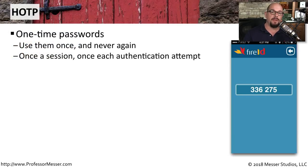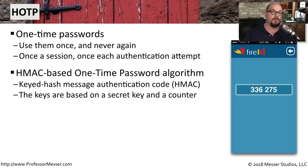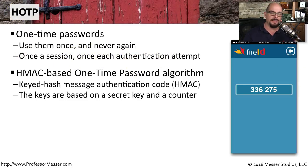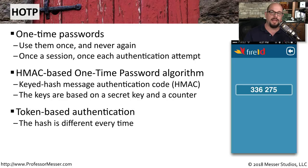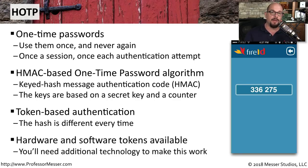Some token generators use a predefined list of tokens — these are one-time passwords that you use once and never use again. You use one password per session, and next time you authenticate, you use the next token in the list. We refer to these one-time use tokens as HOTP, or HMAC-based one-time password algorithm. This uses a secret key and a counter to create these one-time codes, producing a different hash or token every time you need to authenticate, using a combination of hardware and software for this HOTP access control method.